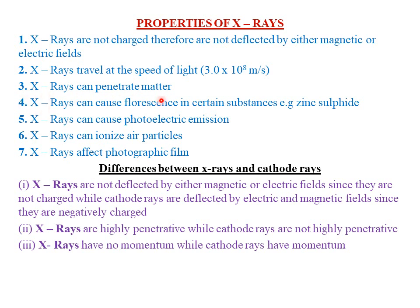The fourth property of X-rays is that X-rays can cause fluorescence in certain substances such as zinc sulfide. This simply means that when X-rays are incident on a material such as zinc sulfide, they can cause it to glow or fluoresce. The fifth property of X-rays is that X-rays can cause photoelectric emission — that is, they can cause electrons to be emitted from a metal plate.